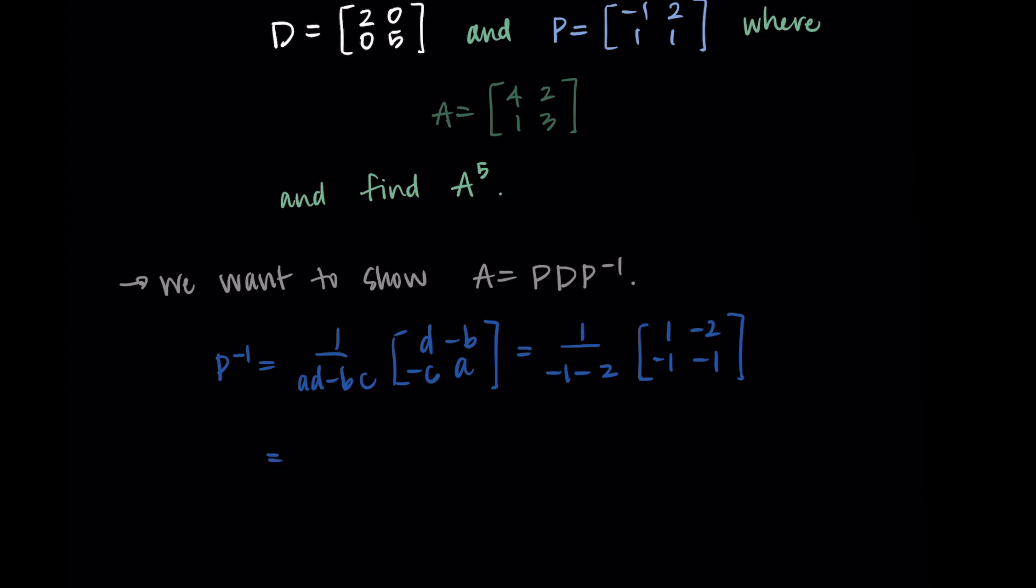Now I just need to simplify. On the outside, I'm getting my scalar is negative 1/3, and we'll just distribute that into the matrix. In the first row, I'm getting negative 1/3, 2/3. In the second row, I'm getting 1/3, 1/3. This is my inverse matrix.